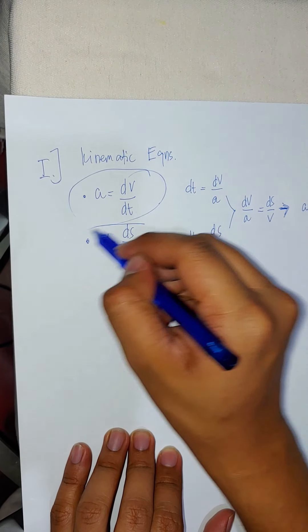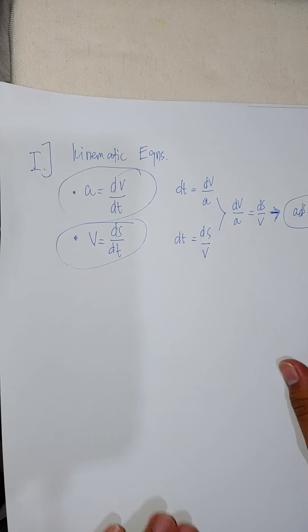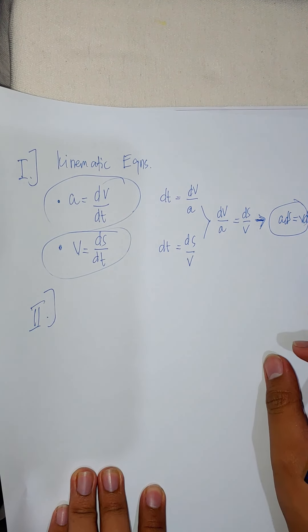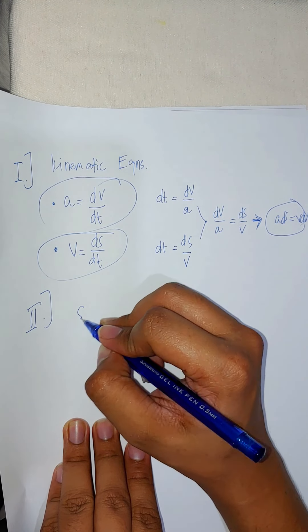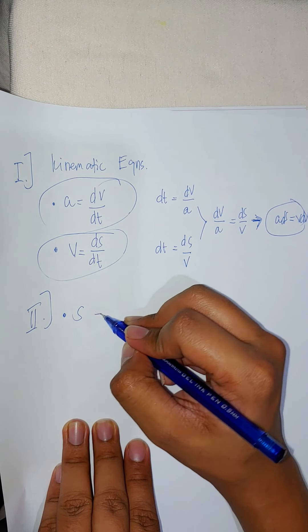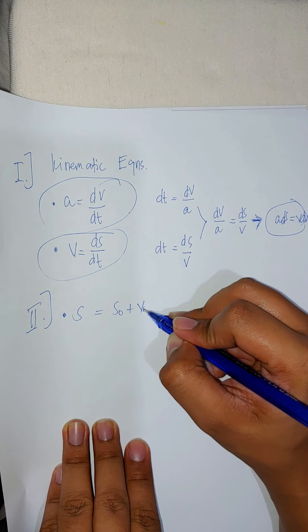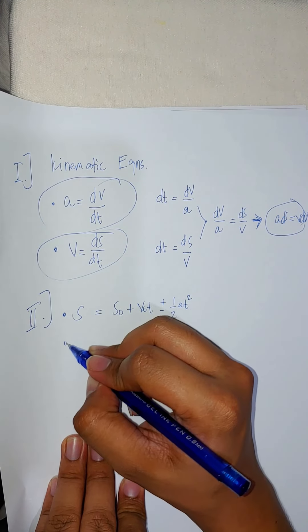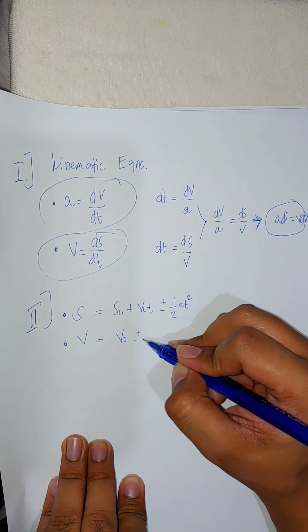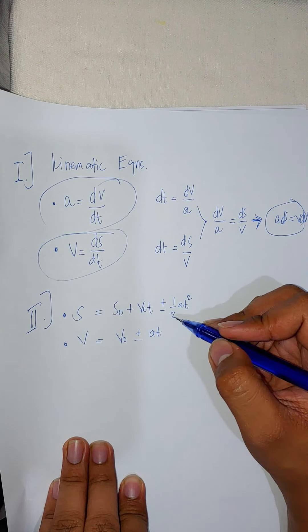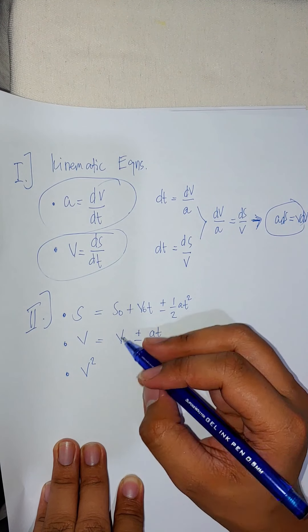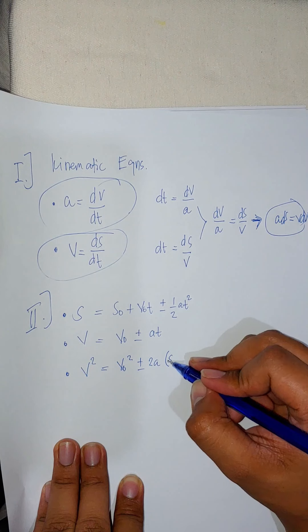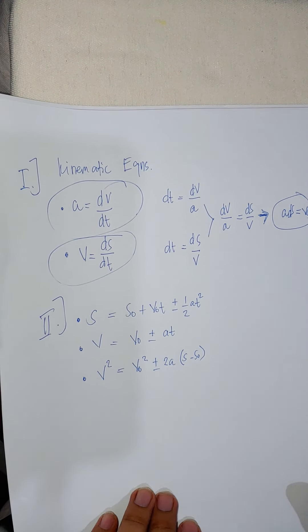These three equations are important to remember. The second set of kinematic equations considers constant acceleration. We have: (1) final position equals initial position plus initial velocity times time, plus or minus half the acceleration times time squared; (2) final velocity equals initial velocity plus or minus acceleration times time; and (3) final velocity squared equals initial velocity squared plus or minus twice the acceleration times displacement.